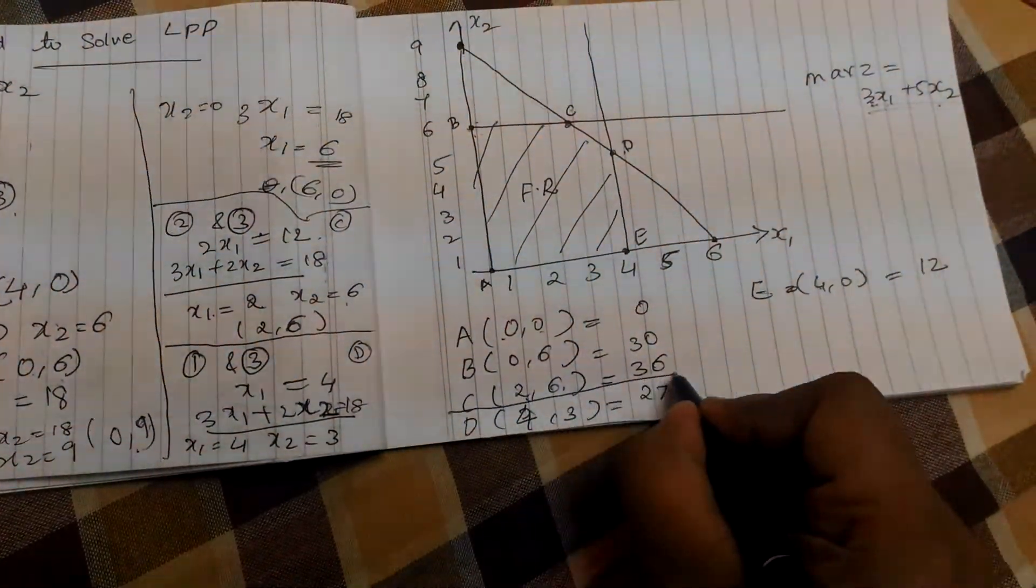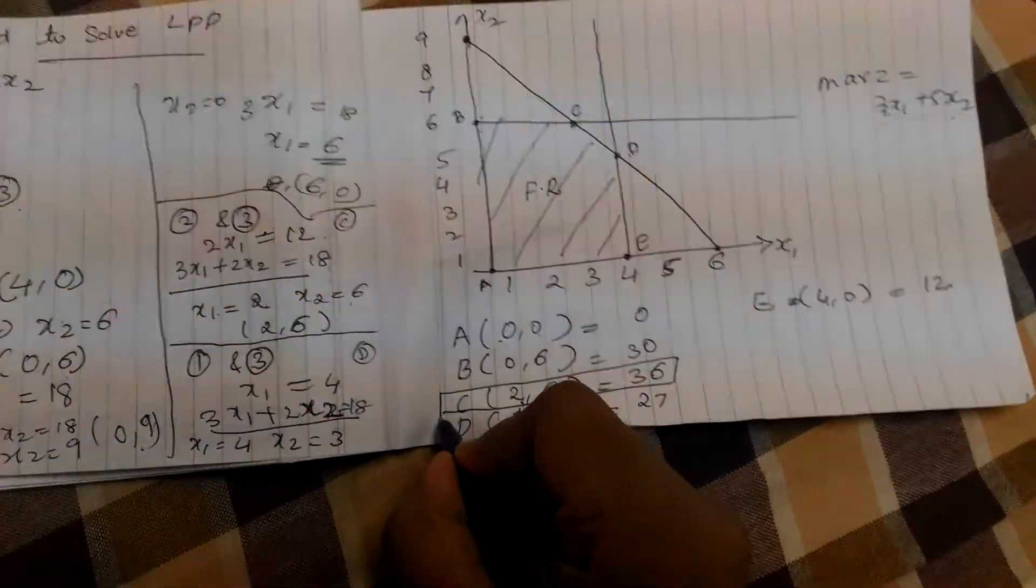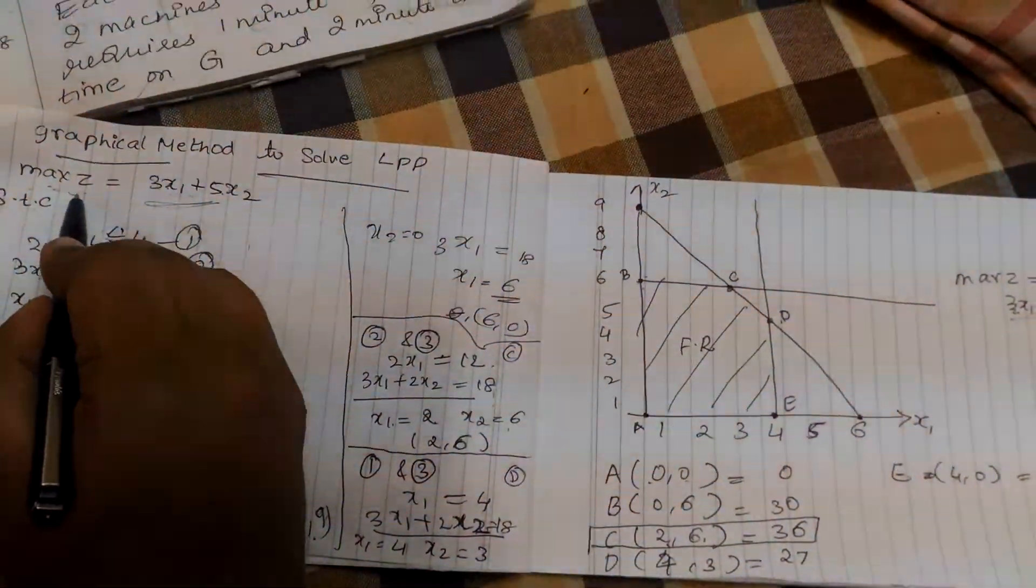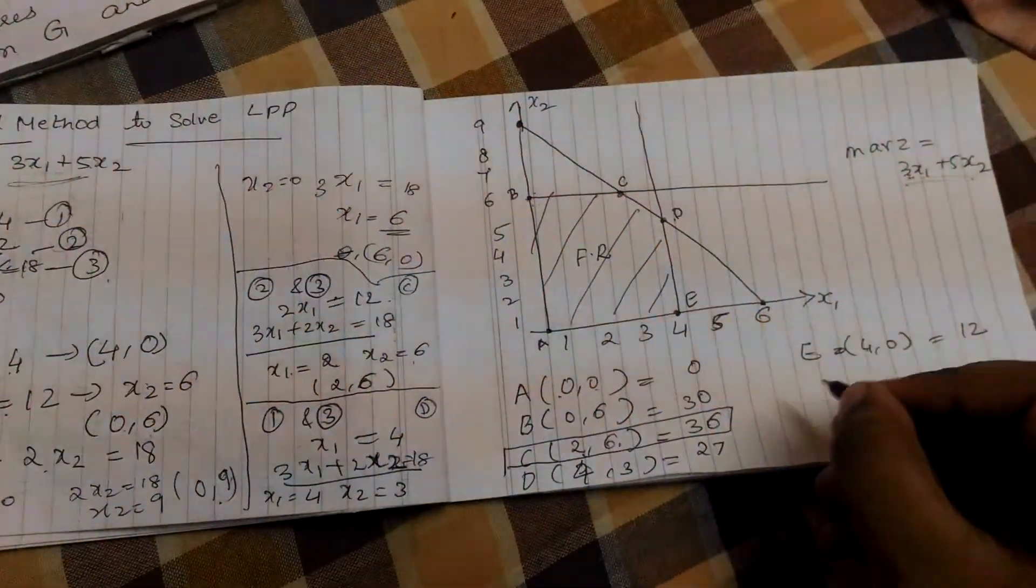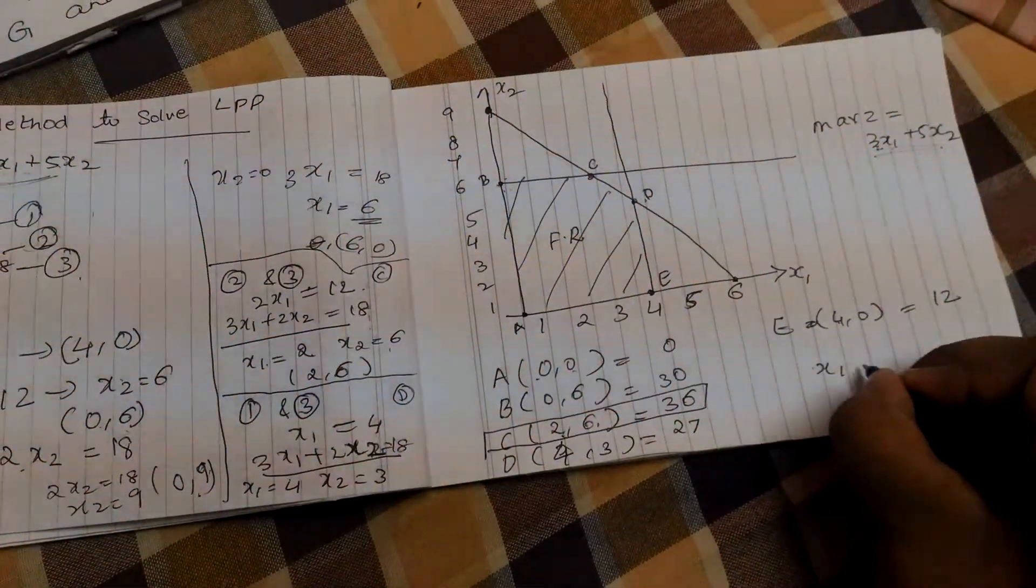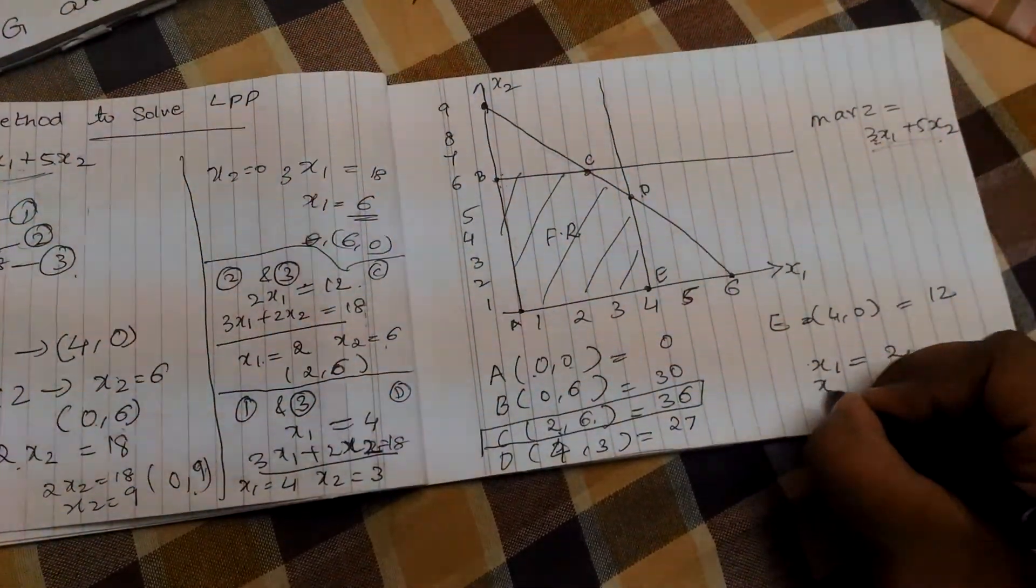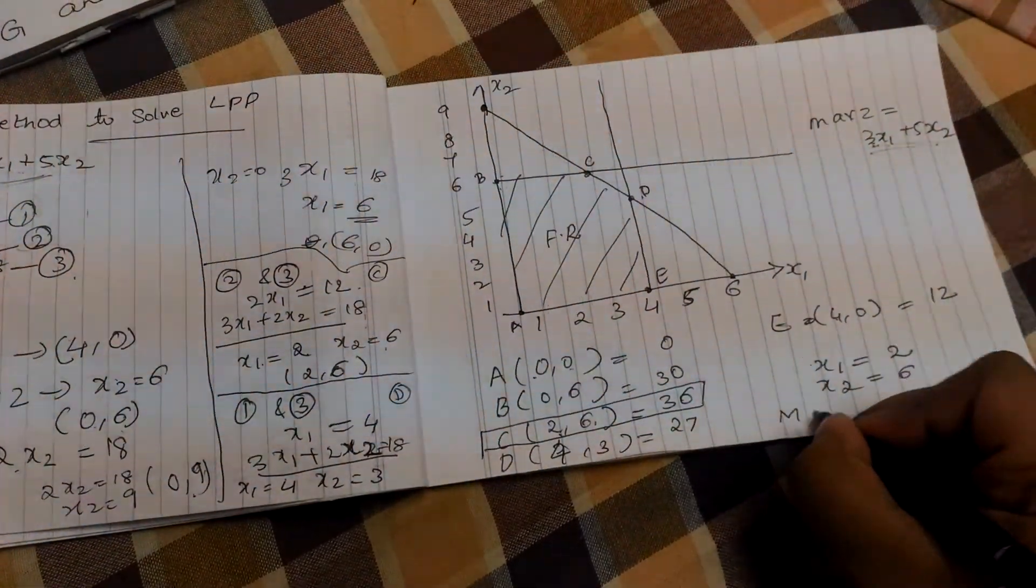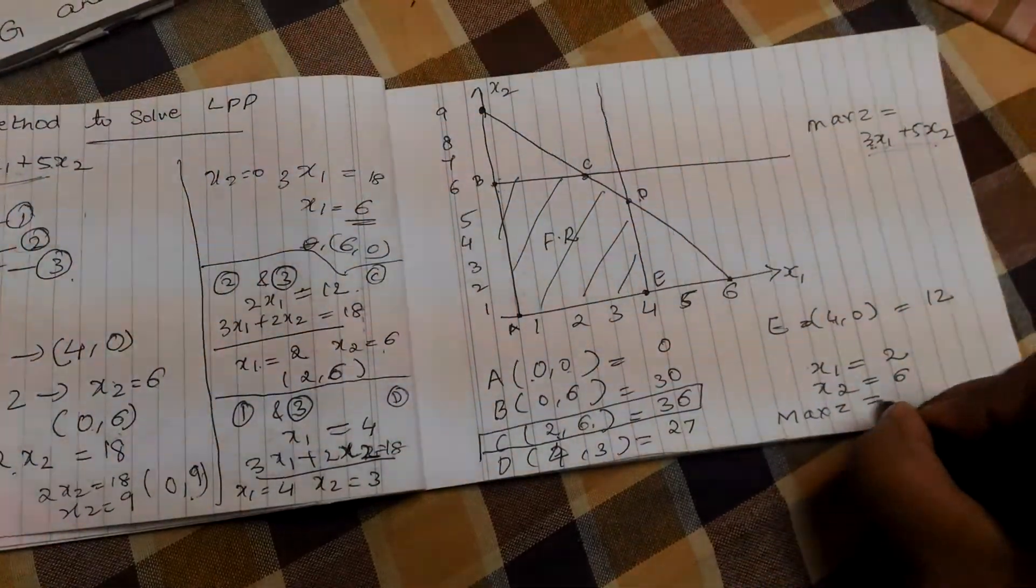And, the maximum value we get here is 36. We are finding maximum value because the objective function is of maximization type. The final answer is, x1 value is 2, x2 value is 6 with the max z value as 36.